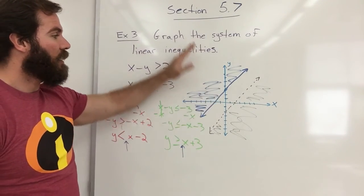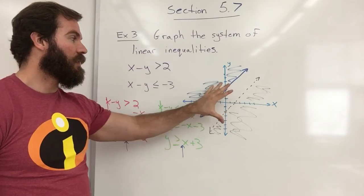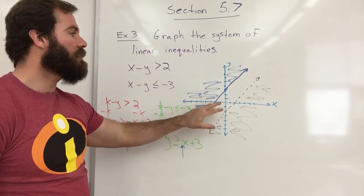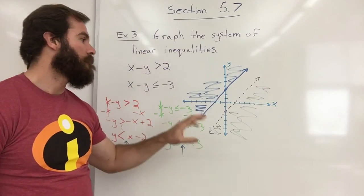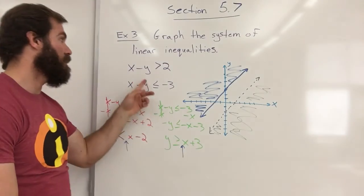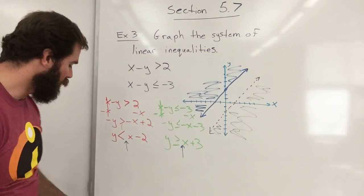They're shaded in opposite directions. This has no solutions. When you have parallel lines that do not cross or blend there is no solution for this system of inequalities. But that's what the graph would look like.